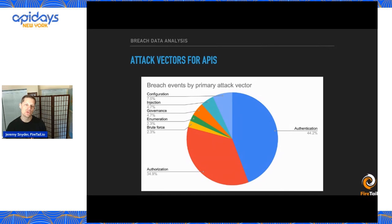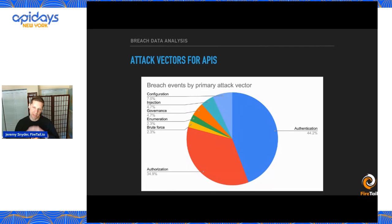The attack vectors for APIs won't be a huge surprise to anybody when we analyze the data. We've analyzed this both in terms of volume of records and in terms of number of breach events, using a weighted averaging across those. Authentication and authorization really take the cake — they are by far the number one and number two.